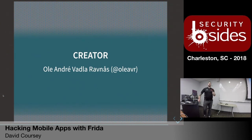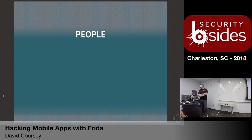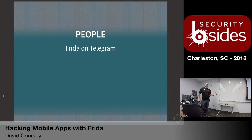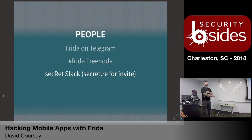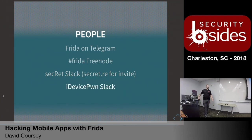The creator of Frida — we're all standing on the shoulders of giants. Frida on Telegram is a pretty good resource for learning, but it's like IRC in the 90s — do your homework before asking questions, or it's not pretty. Frida on Freenode is basically a mirror of Telegram. There's also a Secret Slack where the guy who runs it hacks on Clash of Clans and develops cheats. iDevicePwn is for jailbreaking. Those last two are really low volume, so they're not so bad.